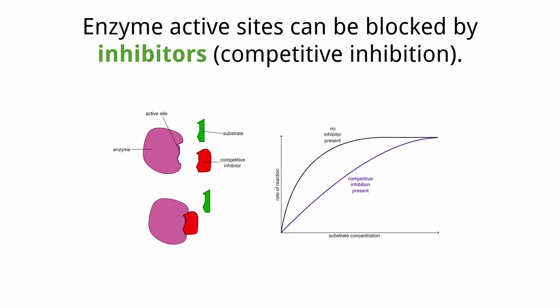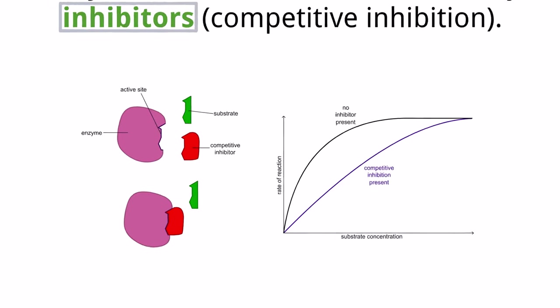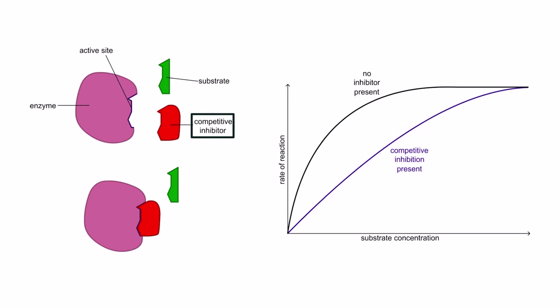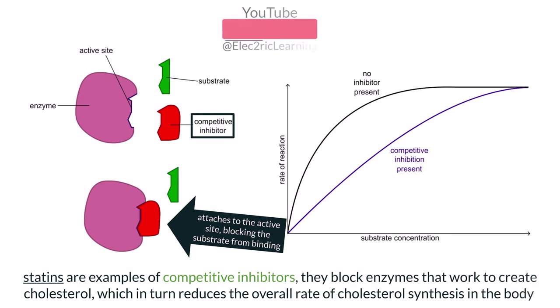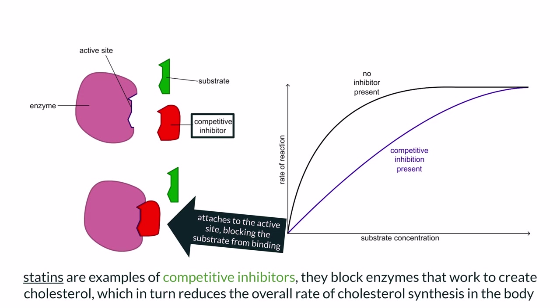Enzymes can do their job of catalyzing reactions when the proper substrate binds to them, but in some cases the function of enzymes can be inhibited, meaning the enzyme will not be able to function for a period of time. Inhibitors are specific molecules that can prevent enzymes from working, and they come in two different versions. The first is called a competitive inhibitor, which is when a molecule — the inhibitor — binds to the active site on the enzyme, physically blocking it from binding with the substrate it would catalyze. Molecules called statins are examples of competitive enzyme inhibitors; they block the active site of specific enzymes that work to form cholesterol, reducing the amount of cholesterol made in the body. Statins can be prescribed to people who have trouble with high LDL cholesterol.